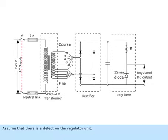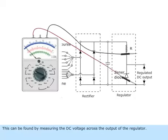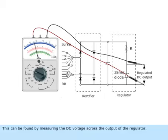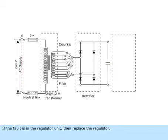Assume that there is a defect in the regulator unit. This can be found by measuring the DC voltage across the output of the regulator. If the fault is in the regulator unit, then replace the regulator.